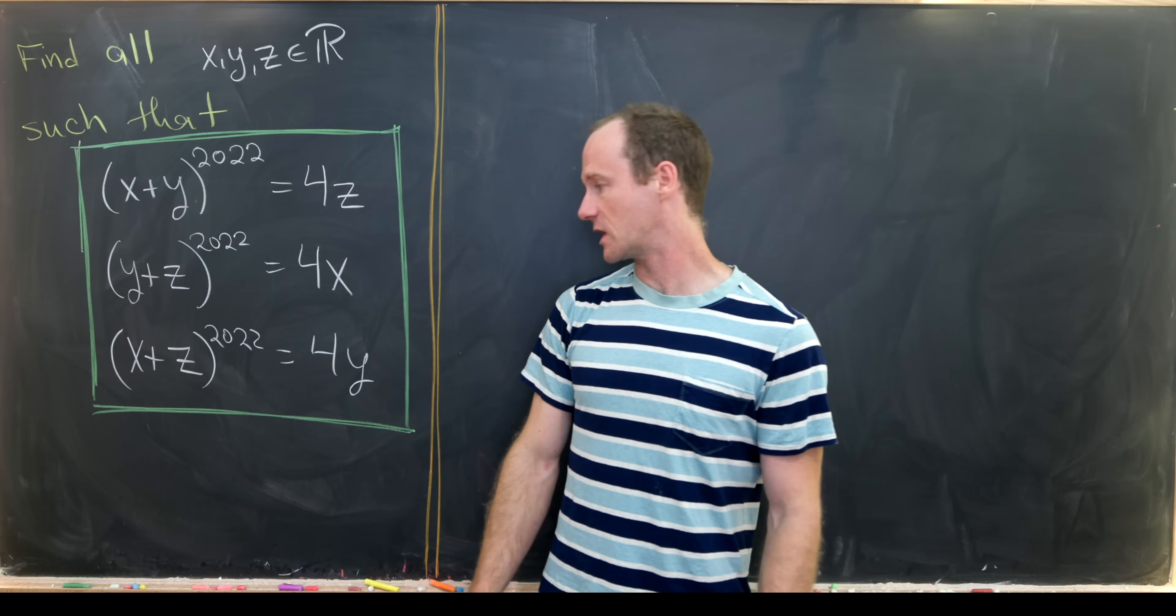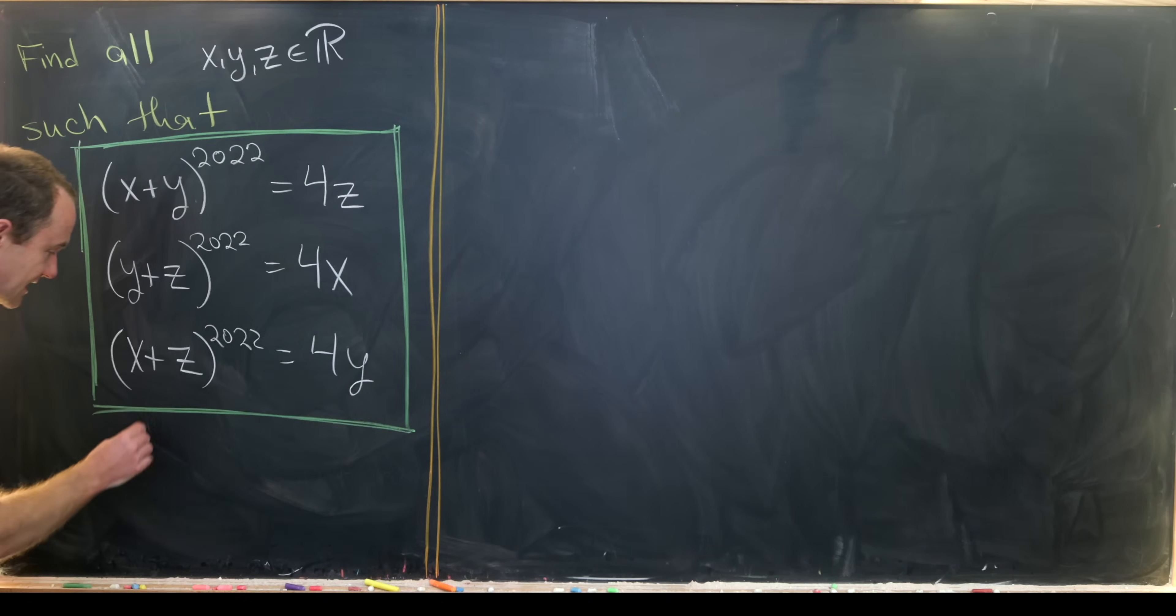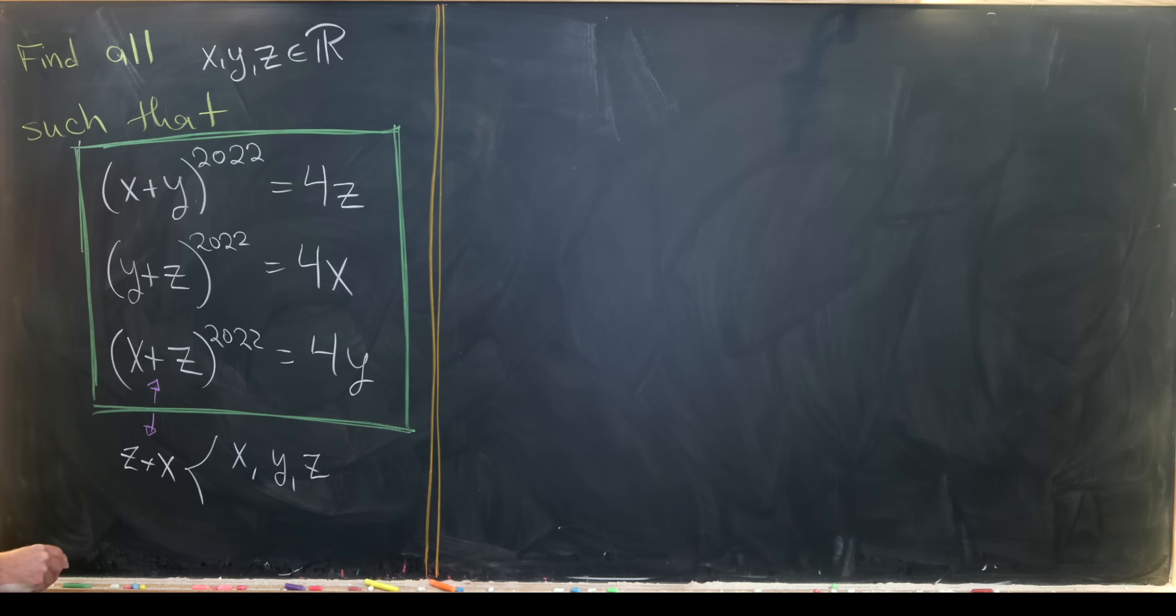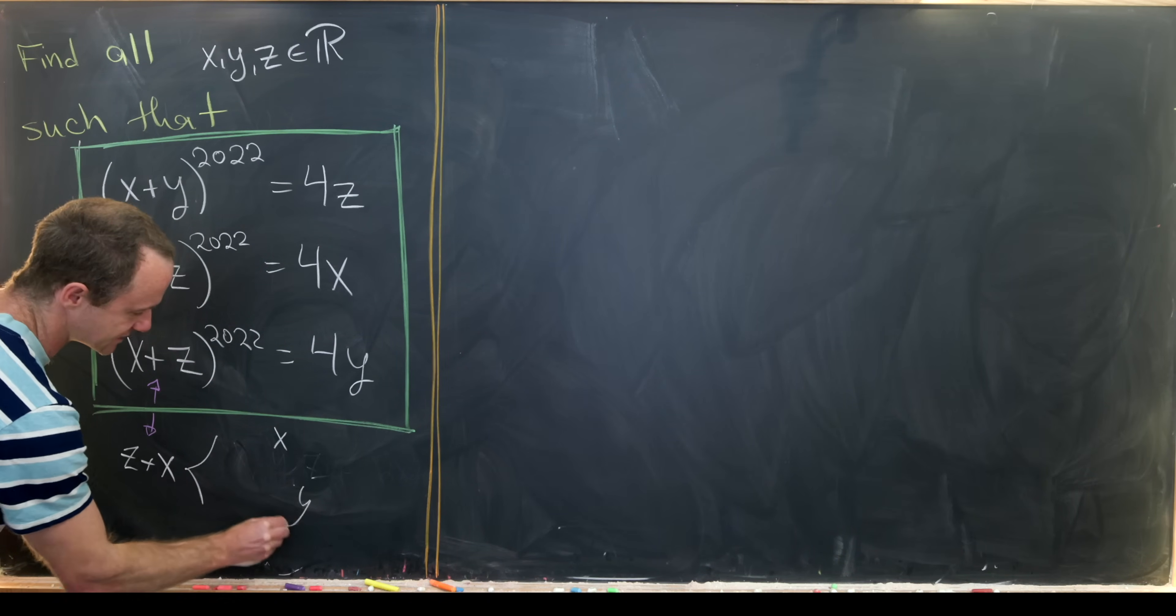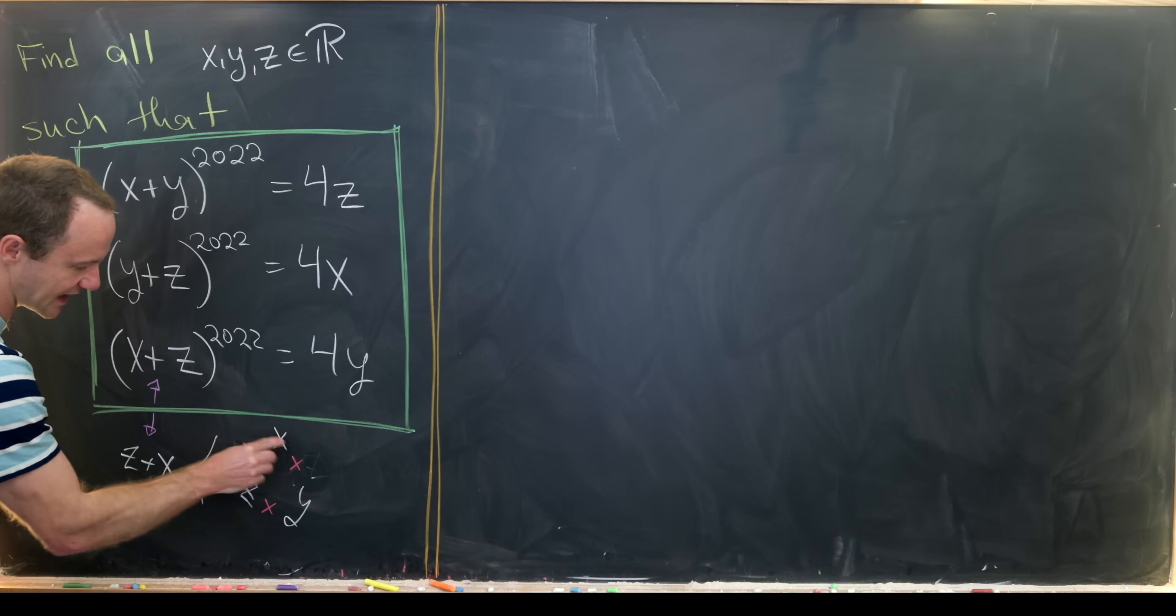Now before we jump into the solution, I'd like to note that over here on the left we've got these cyclic permutations of two elements from this set {x, y, z}. Here we have x+y, y+z, x+z. So if you're adding them in order, we've got x+y+z+x+y+z, and then deleting one, you would see that z and x are together that way.